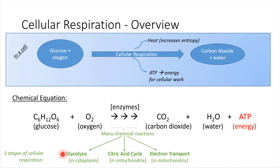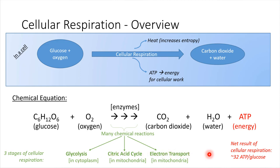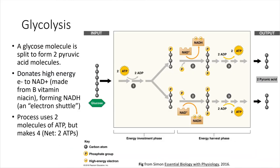In glycolysis, we begin with a molecule of glucose. At the end of the whole process, after electron transport has completed, the cell will have generated about 32 ATP molecules from that one starting glucose molecule. That's a lot of ATP from one glucose. So let's go ahead and look at some of the details of glycolysis.